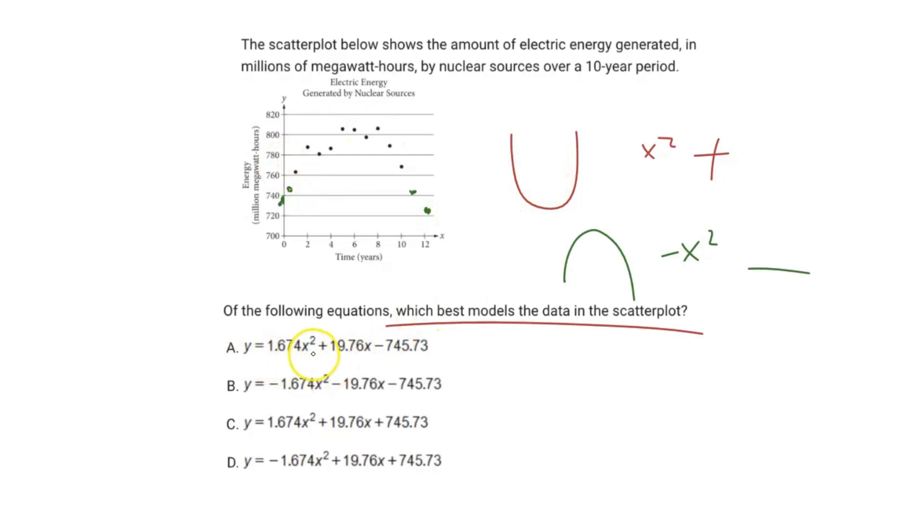So we're going to eliminate any answer choices that have a positive coefficient in front of the x² term. That gets rid of A and C.